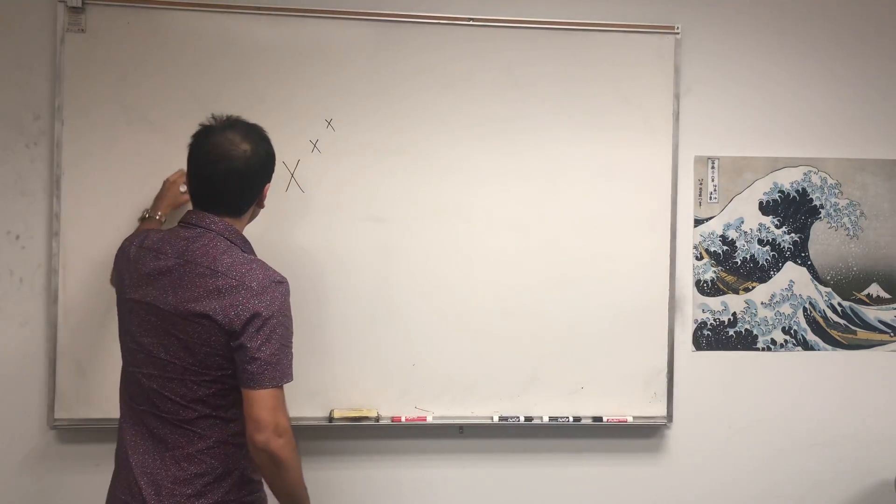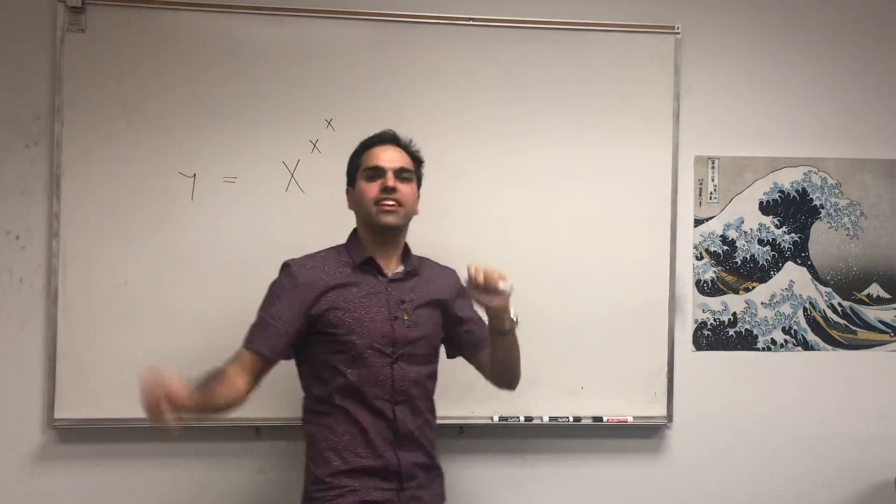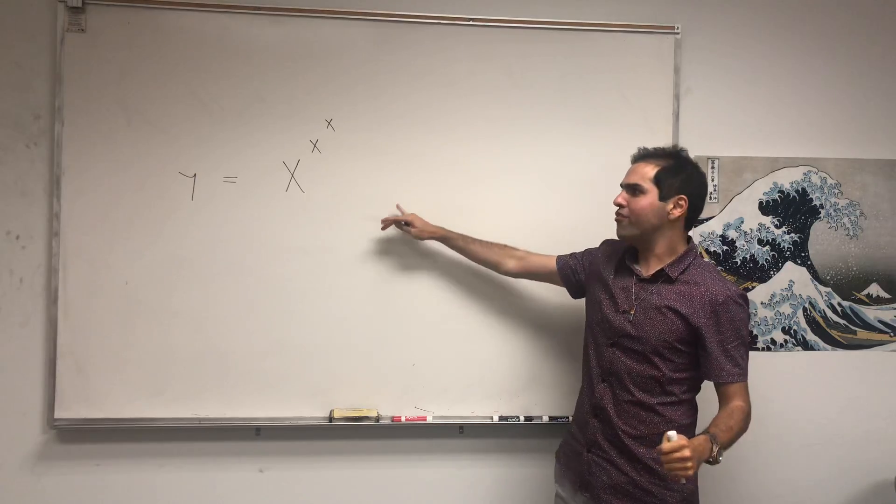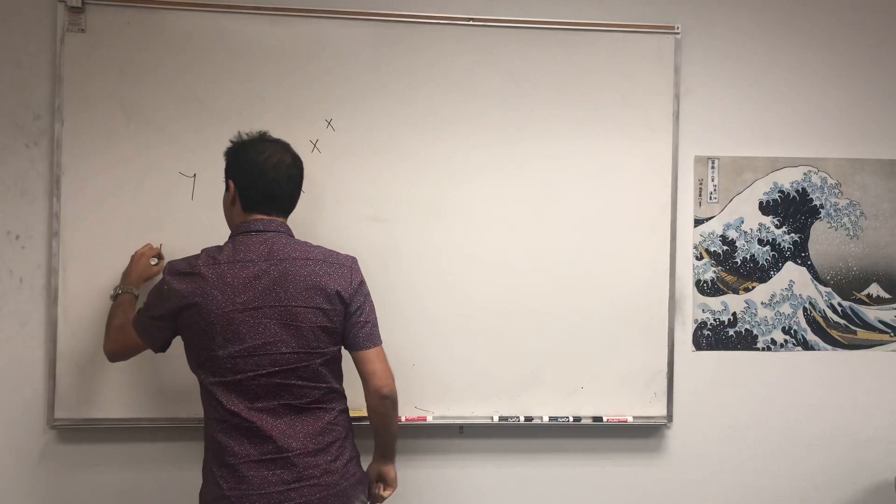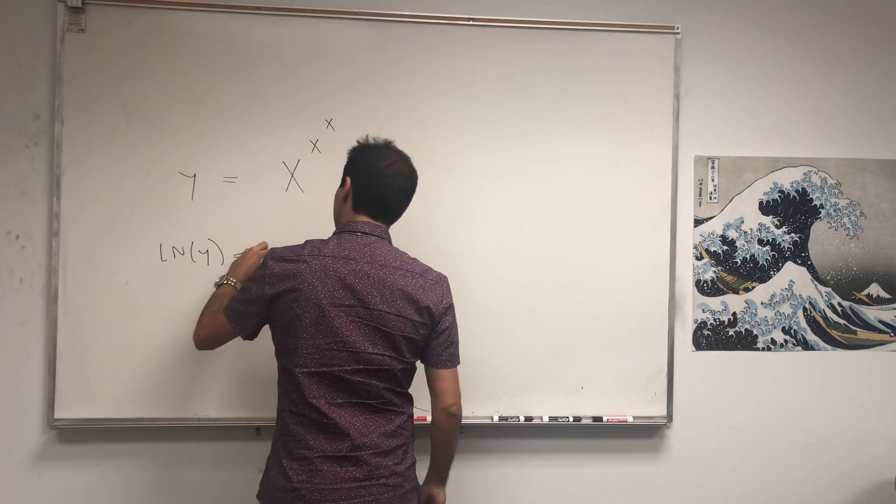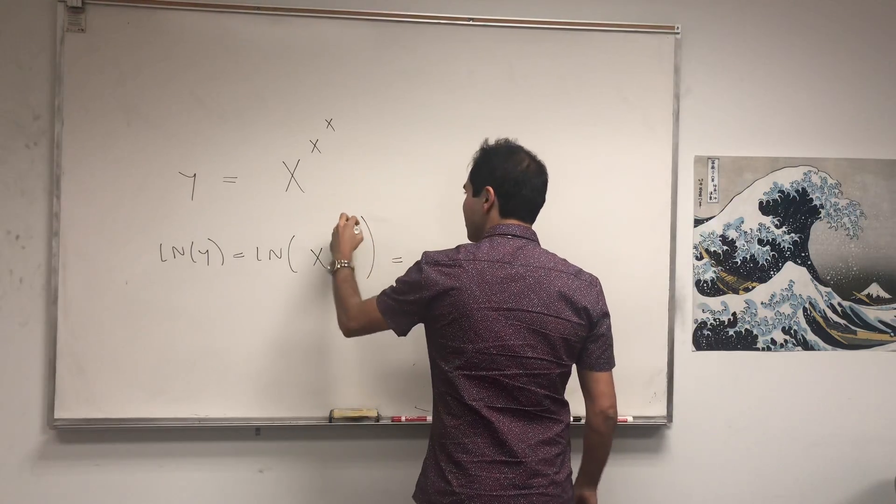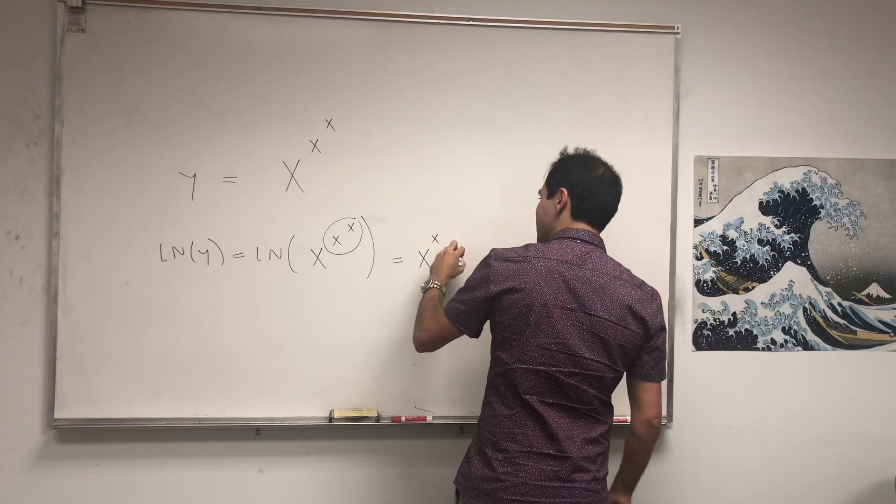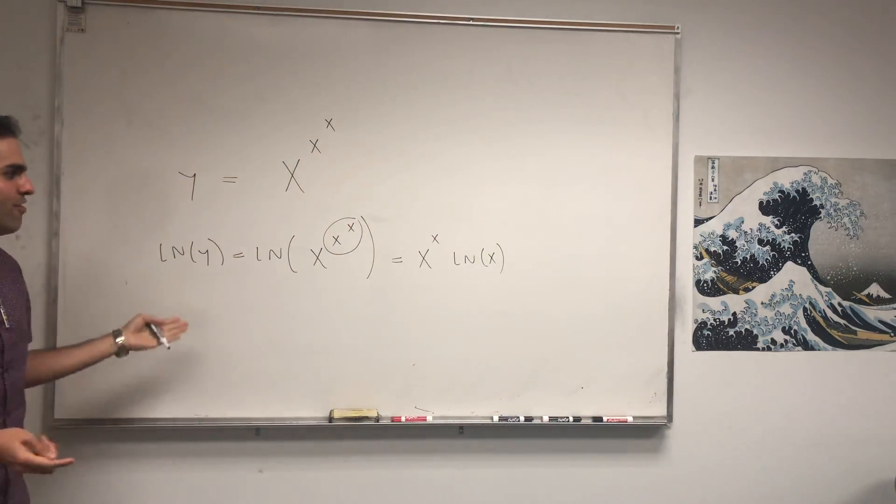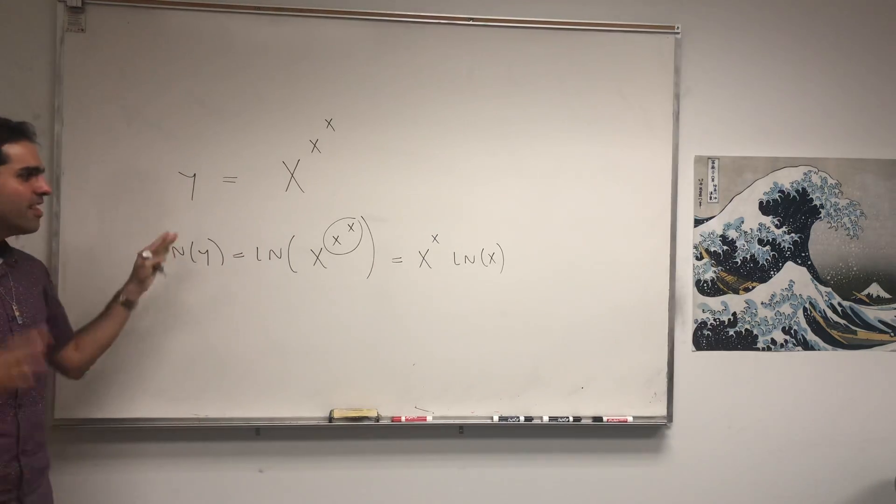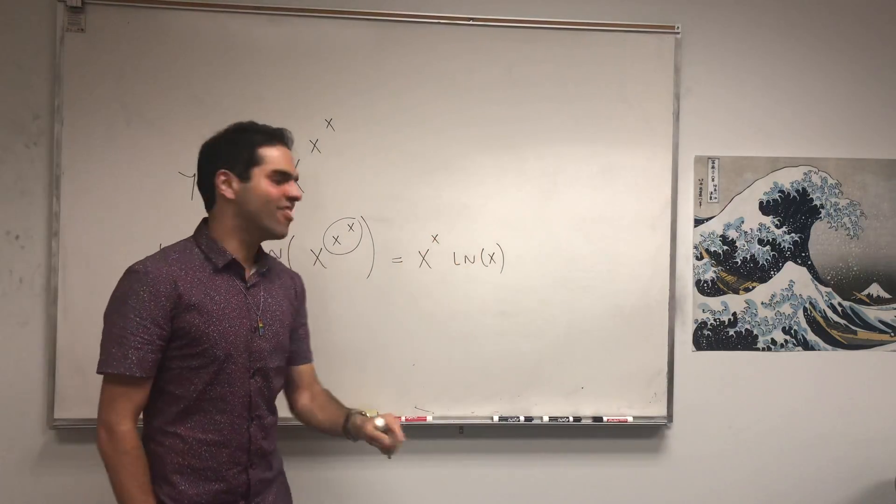And this is a really nice way of doing it, because sure, you can write this as e to the ln of x times something else, but in order to differentiate this, why not just use logarithmic differentiation? So take ln of both sides, and so you get ln of x to the x to the x, which becomes x to the x times ln of x. And usually for logarithmic differentiation, you just differentiate it, but I thought, why not just go one step further? Let's do logarithmic logarithmic differentiation.